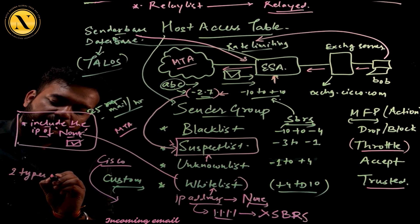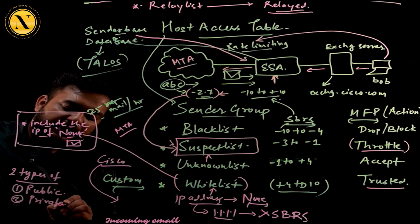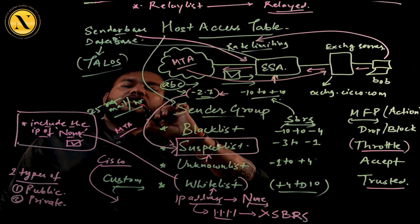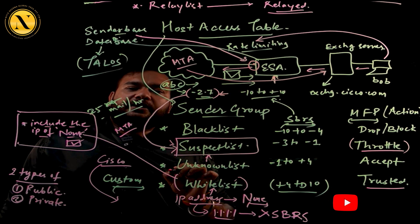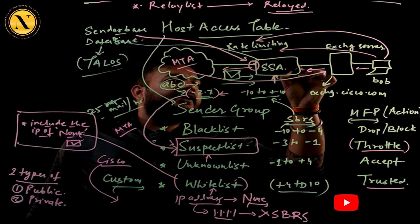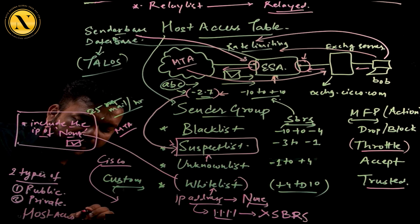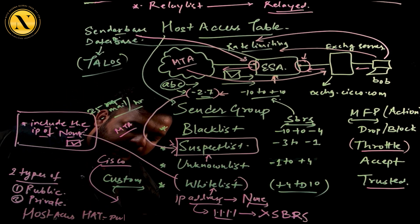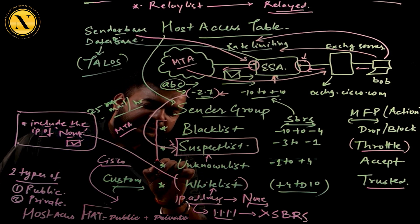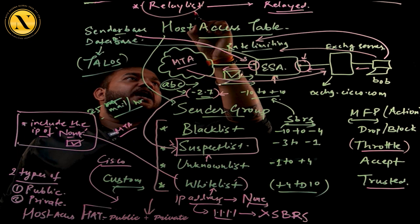According to your Email Security Appliance, there are two types of listeners: one is called a public listener and another is called a private listener. When an email comes from the outside world to the ESA it is listened on the public listener. When an internal user wants to send an email outside, it is listened on the private listener. So the Host Access Table equals public plus private — HAT for public listeners covers blacklist, suspect, unknown, and whitelist; HAT for private listeners covers the relay list with the relayed mail flow policy.